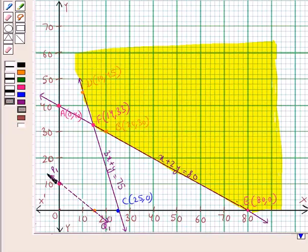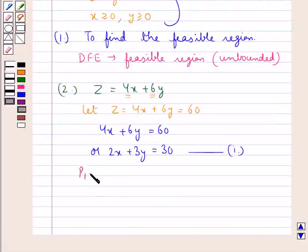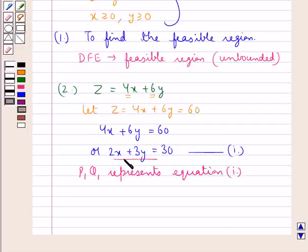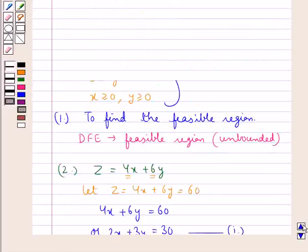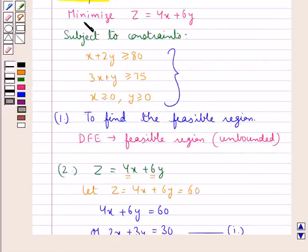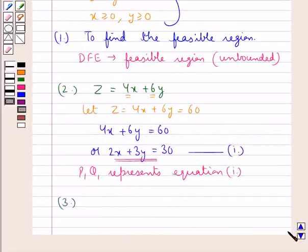Let's graph this equation to get a straight line. So we obtain this line p1q1, which represents this equation 1, which is 2x plus 3y equal to 30. Now since we have that the objective function is of minimization type, we will draw lines parallel to the line p1q1. We will obtain such a line which is nearest to the origin and has at least one point common to the feasible region.